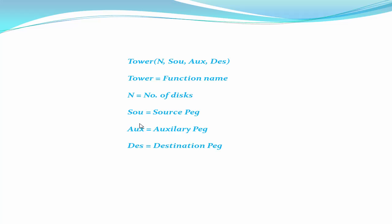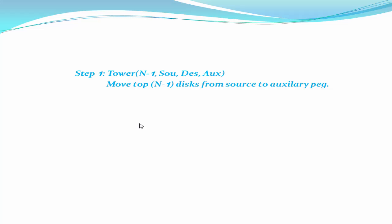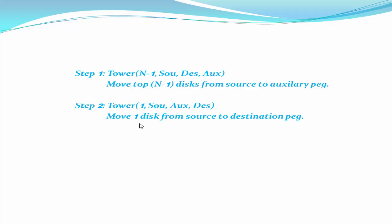To solve this game we use a general notation: tower(), which takes four parameters — n, source, auxiliary, and destination. Tower indicates the function name, n equals the number of disks. Next we follow three recursive steps to solve the problem. Step one: tower(n-1, source, destination, auxiliary) — move the top n-1 disks from source to auxiliary peg.